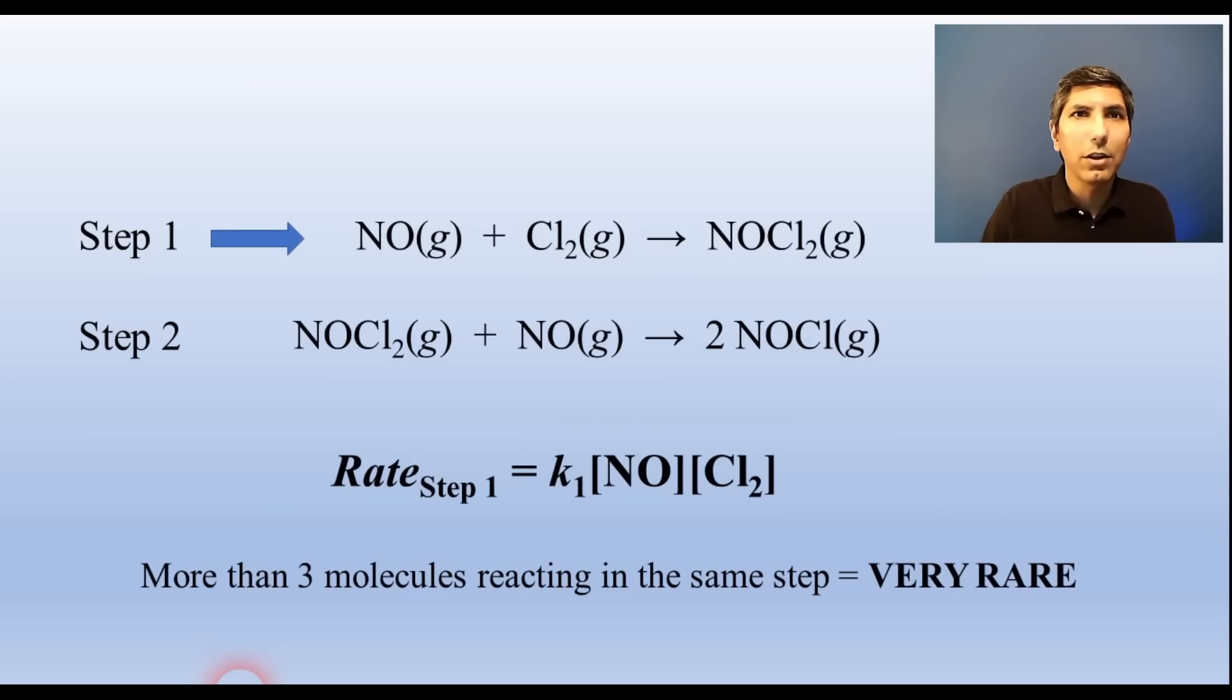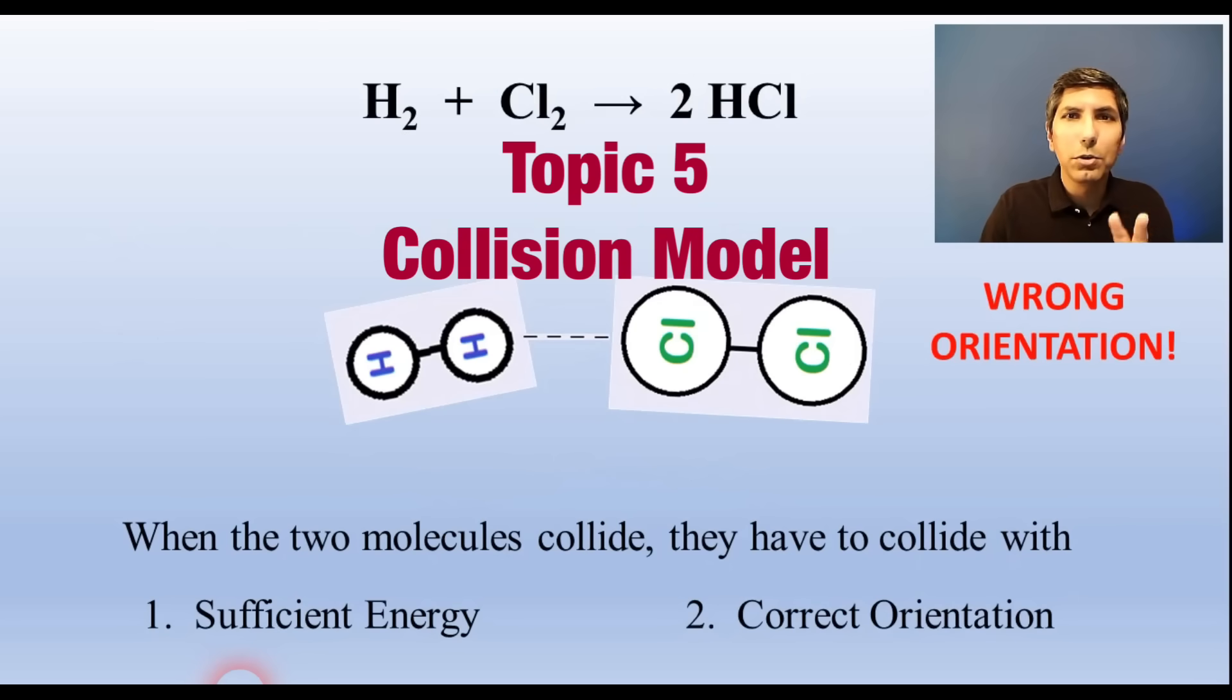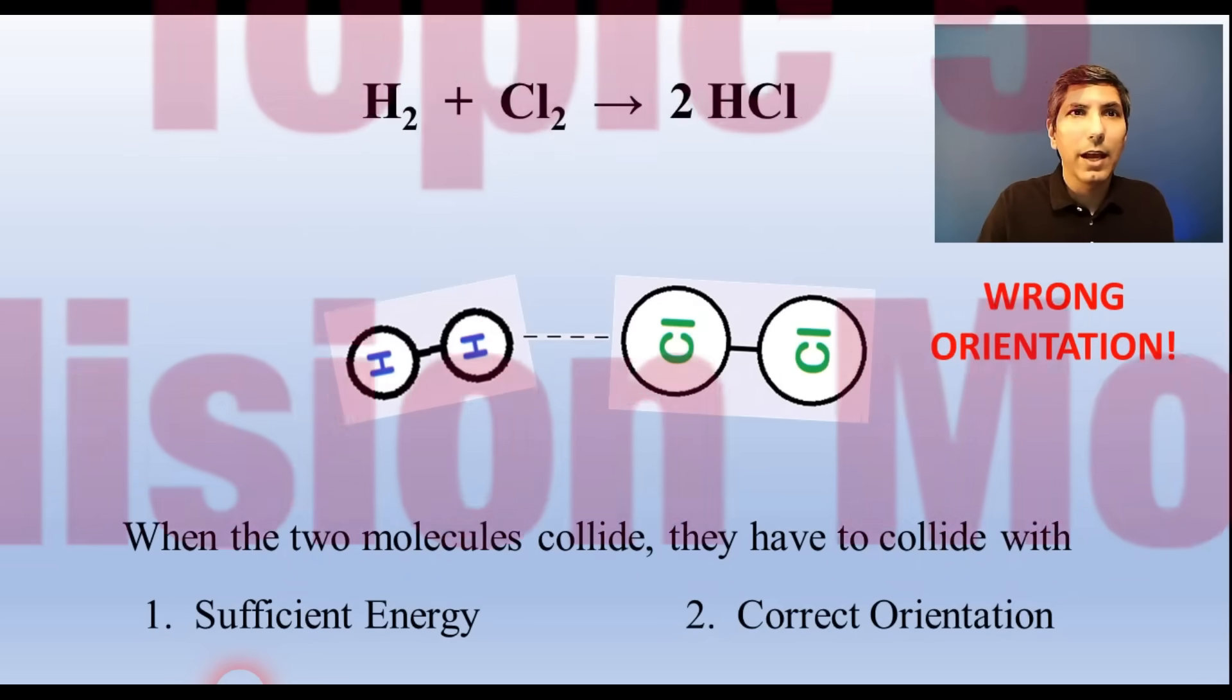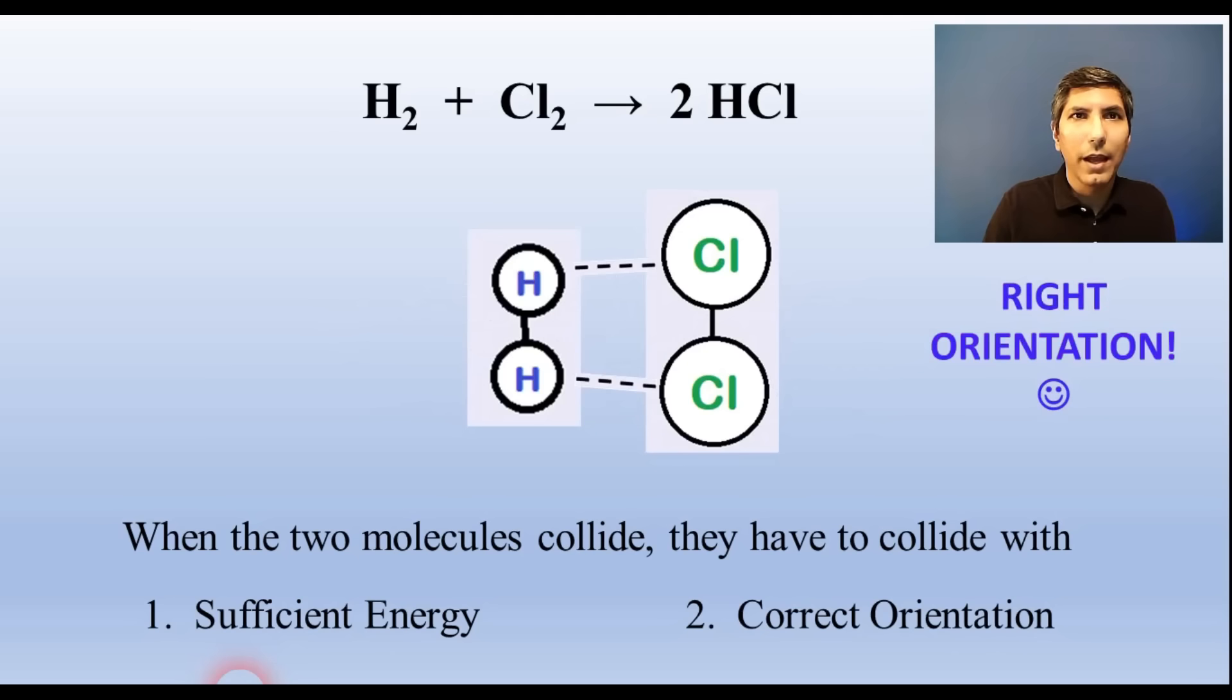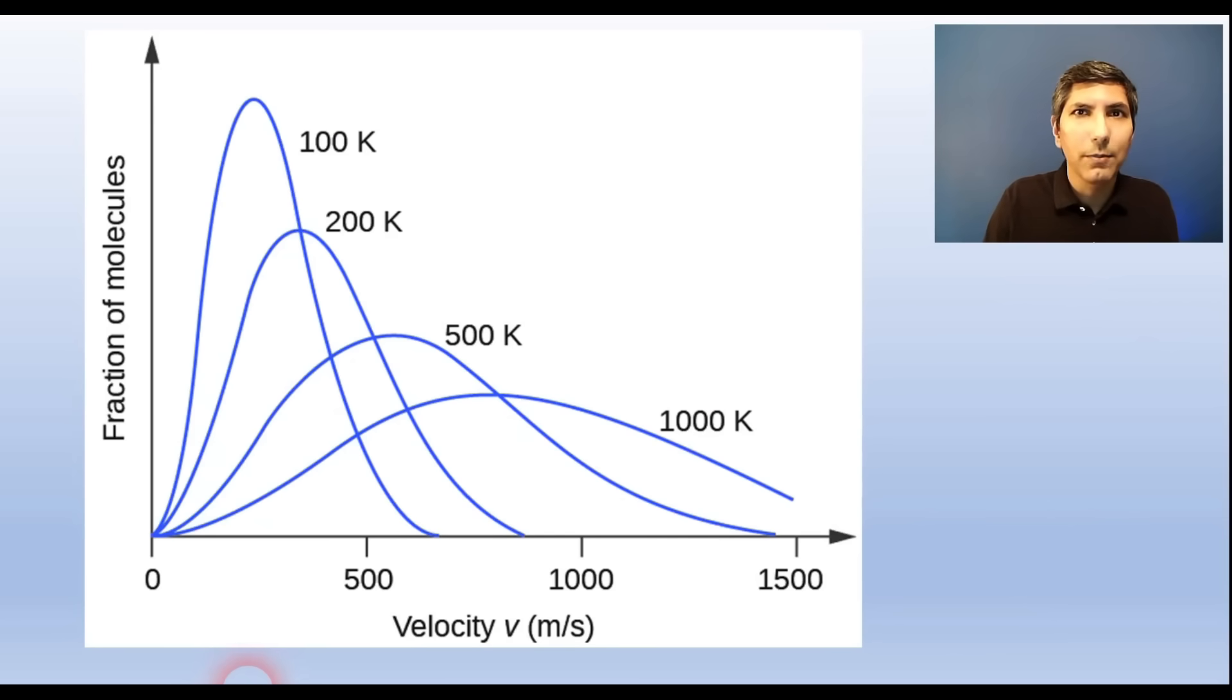In order for molecules to react with each other, two things have to happen. First, they have to collide with sufficient energy. We call that the activation energy. Secondly, they have to collide in the correct orientation, lined up in the right direction so that old bonds can break and new bonds can form. The Boltzmann distribution here shows that at higher temperatures, a greater fraction of the molecules will have at least the minimum amount of energy to react.